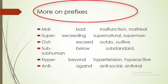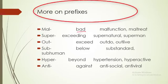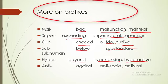'Mal' means bad — 'malfunction', 'maltreat'. 'Super' means exceeding — 'supernatural', 'superman'. 'Out' also means to exceed — 'outsucceed', 'outlive'. 'Sub' means below — 'substandard', 'subhuman'. 'Hyper' means beyond — 'hypertension', 'hyperactive'. 'Anti' means against — 'antisocial', 'antiviral'.